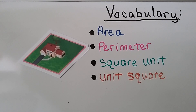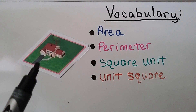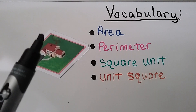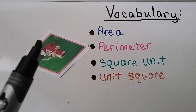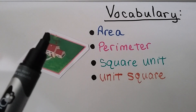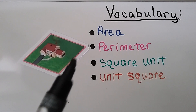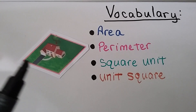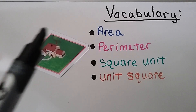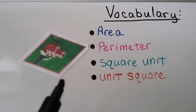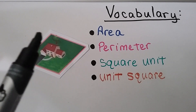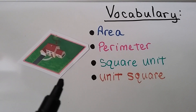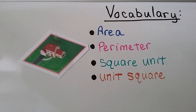Because perimeter is the distance around a shape, we can imagine that perimeter would be like the edge of the property for this house. It's the outside edge of the property going around the yard.